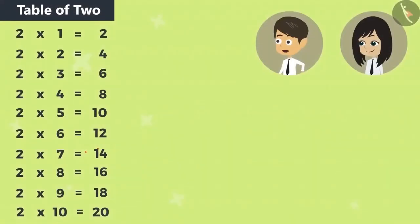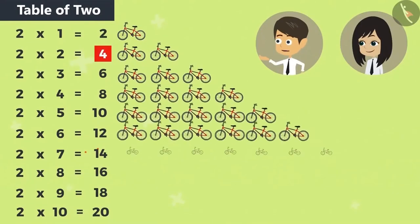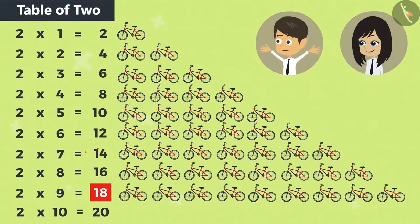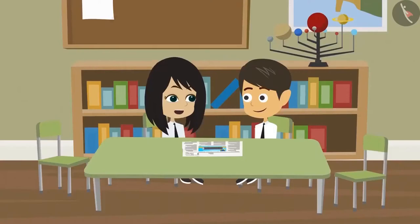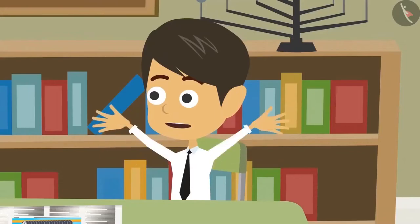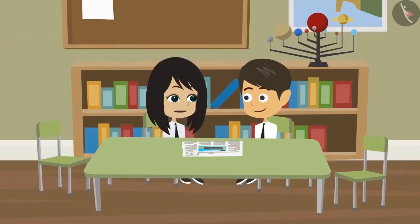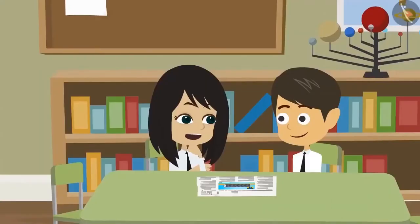Taking a look at this table, we can find that 1 bicycle has 2 tyres, 2 bicycles have 4 tyres. Similarly, 9 cycles will have 18 tyres. You don't need a paper pen if you remember the multiplication table. So now if we want to know how many rickshaws these tyres belong to, we will use the multiplication table of 3.